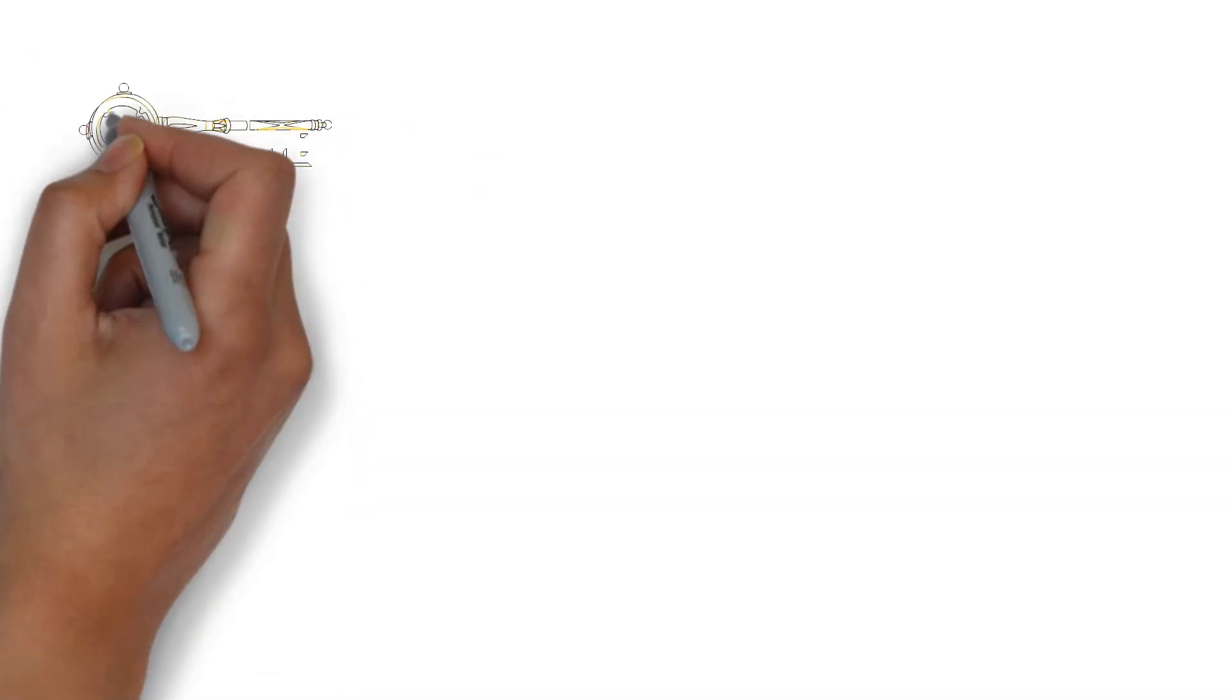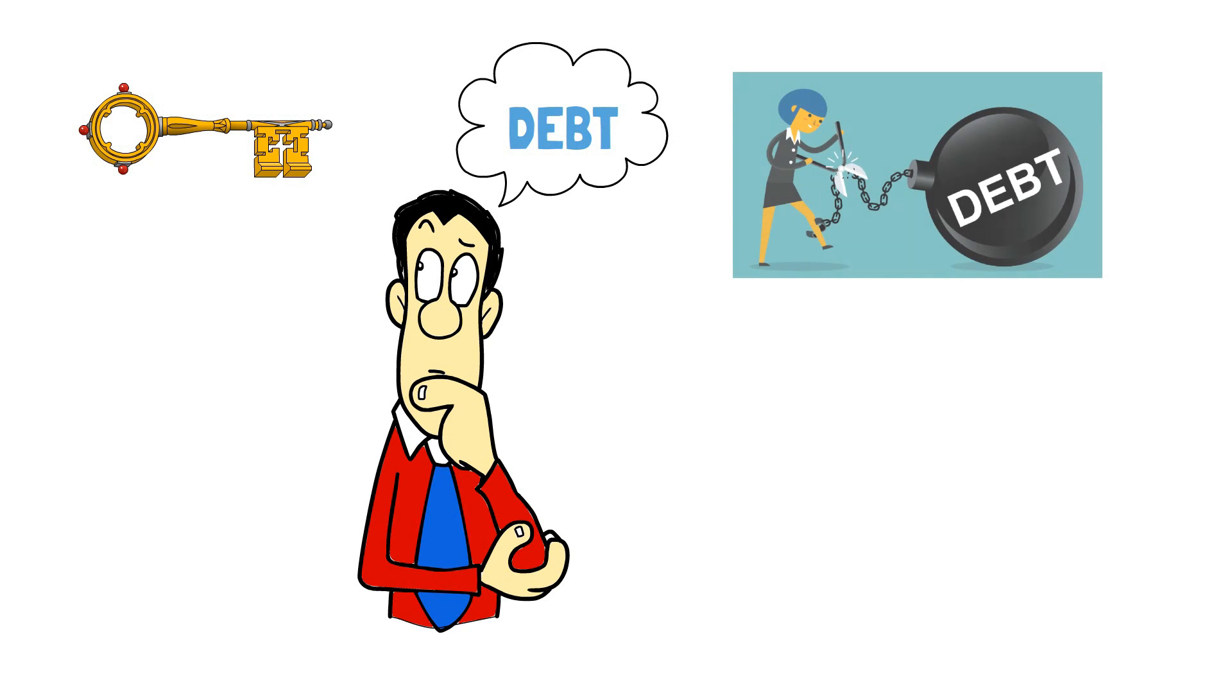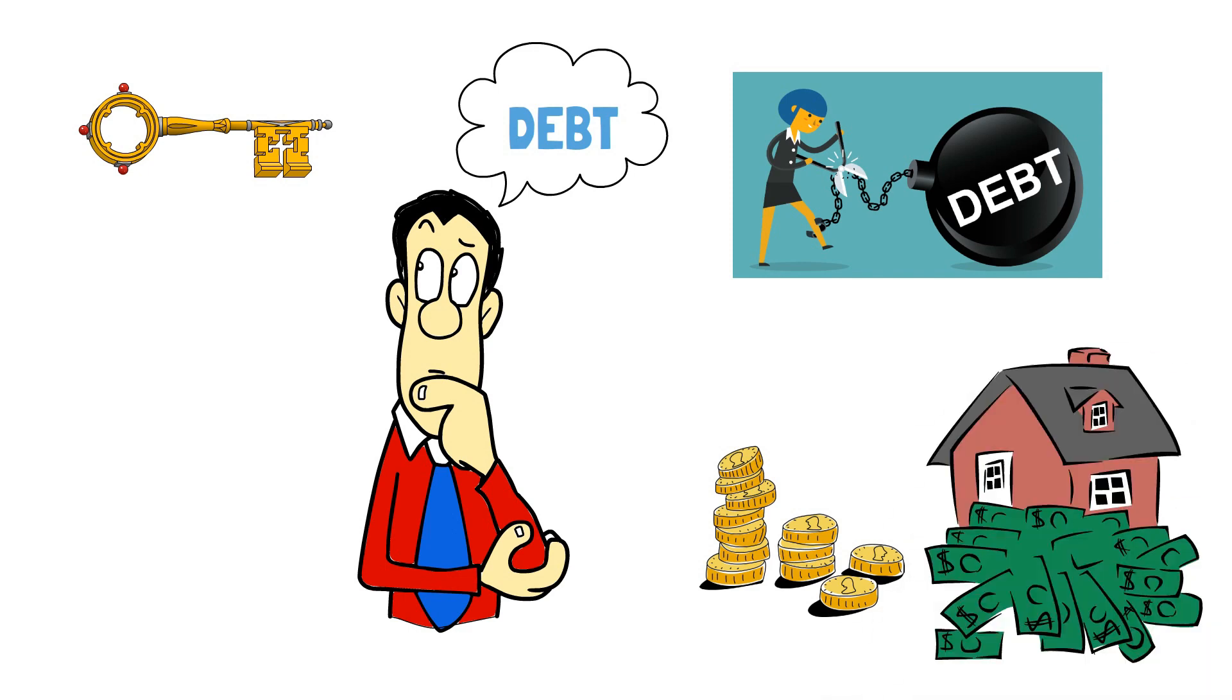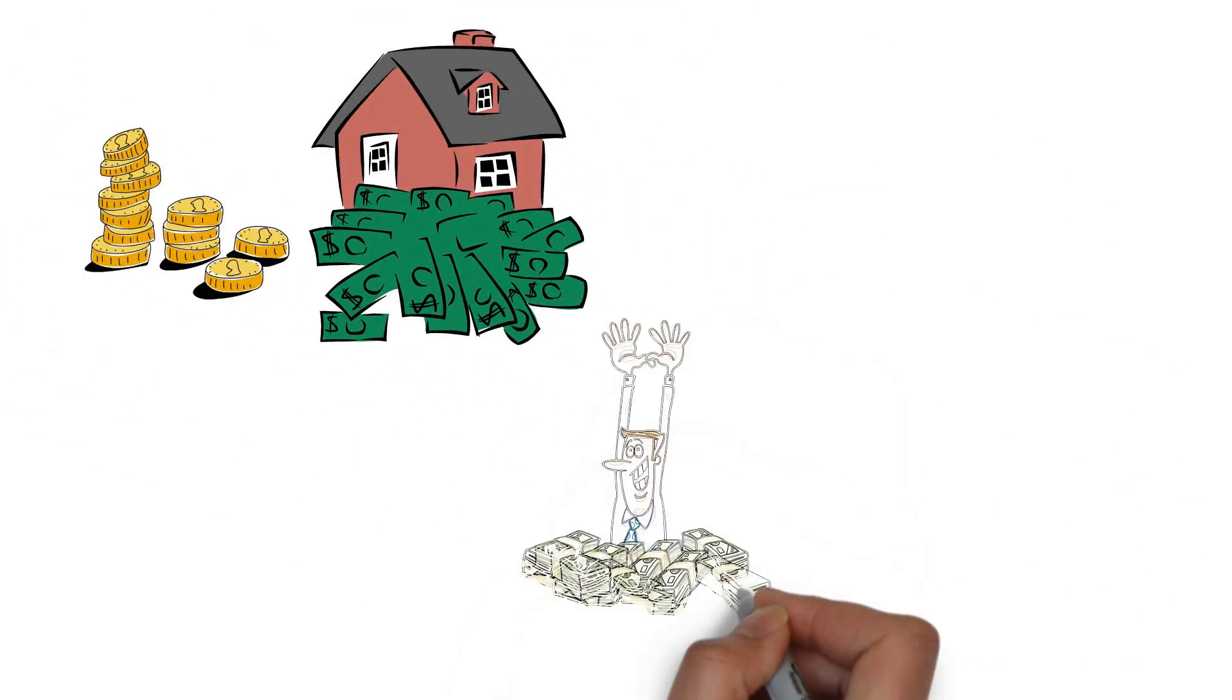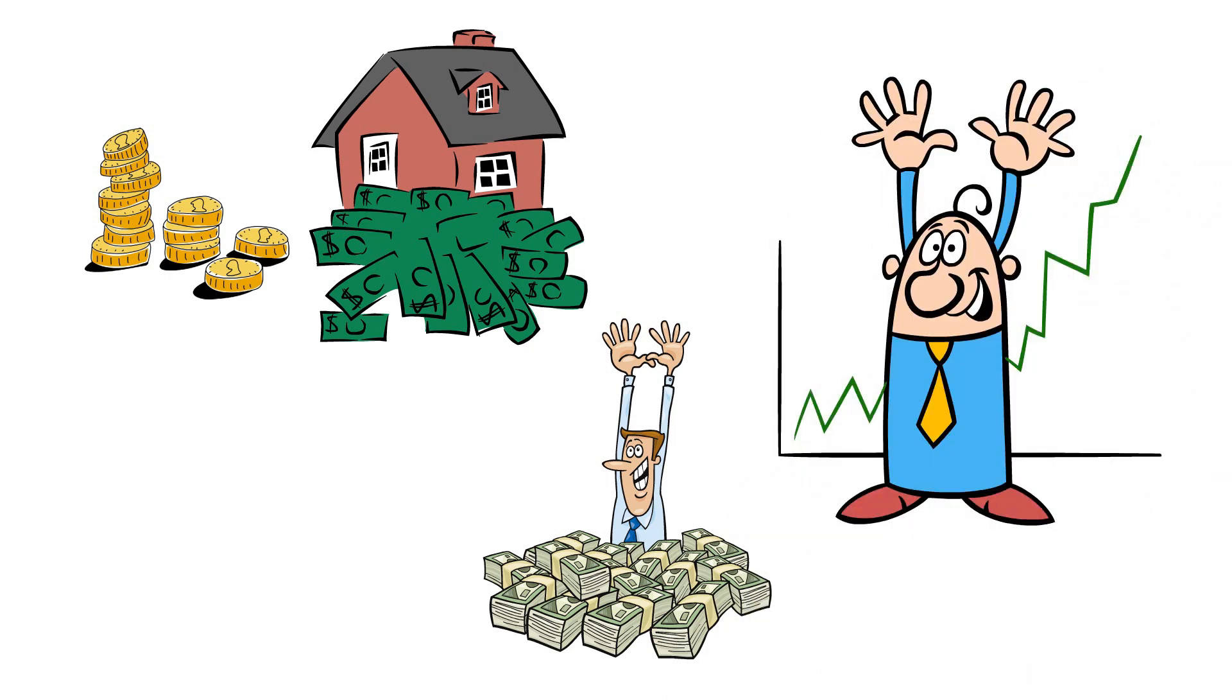The key takeaway is this, be cautious with debt. Avoid consumer debt that doesn't bring you any financial benefits. Instead, if you're going to borrow money, make sure it's for investments that can increase your wealth. This is what the rich do, and it's a strategy you can use to build your financial future.